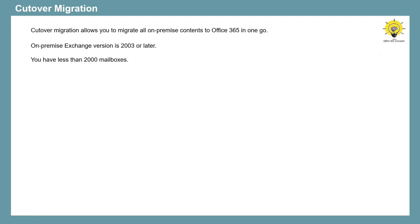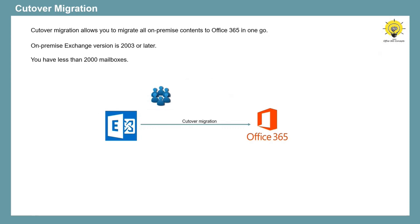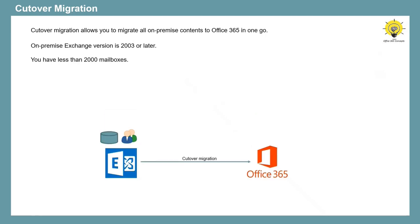You can perform cutover migration when you are planning to move completely to Office 365. You want to move all your on-premise recipients to Office 365, and you want to decommission your on-premise Exchange Server. In cutover migration, the contents from on-premise Exchange Server are copied to Office 365. Cutover migration is not a cut-and-paste process. When you start cutover migration, it first provisions the on-premise accounts in Office 365, and then it copies the contents of these accounts to Office 365.